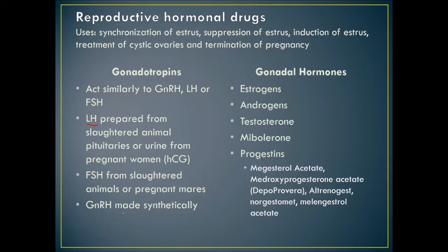Some gonadal hormones include estrogens, androgens such as testosterone, and progestins like megestrol acetate and medroxyprogesterone acetate — also known as Depo-Provera — which suppresses estrus. Other progestins include altrenogest and norgestimate. These progestins can help protect pregnancy, or they can suppress estrus because if the body thinks it's pregnant, it won't cycle again.